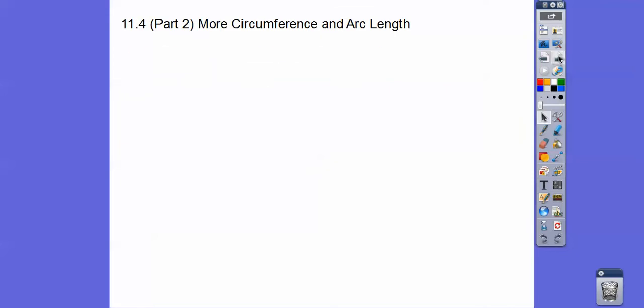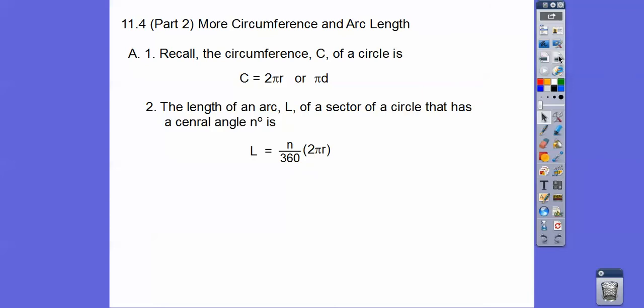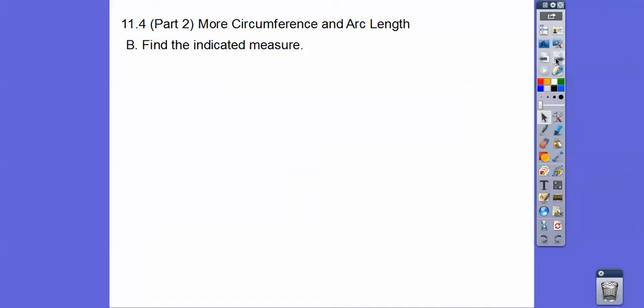More circumference and arc length. From yesterday's lesson, circumference is 2πr, or π times diameter, depending on which one they give you. And then the arc length is whatever that central angle is, which is n, the whole circle's 360. So the arc length is just the fraction of the circumference. So there's the circumference 2πr, and so the fraction of the circumference is n over 360. We're going to use that on all of these.